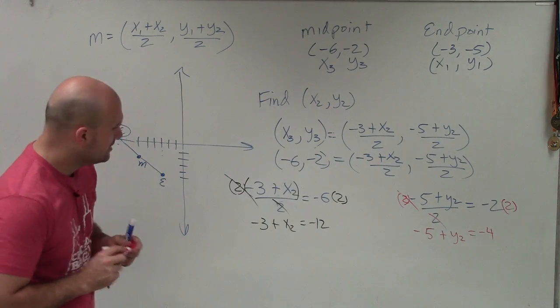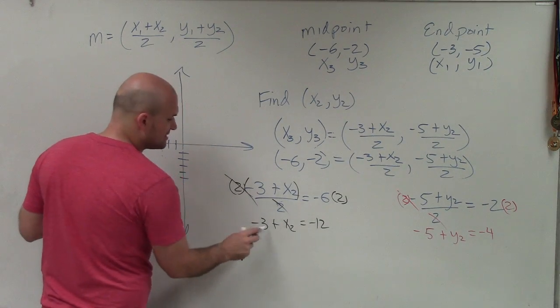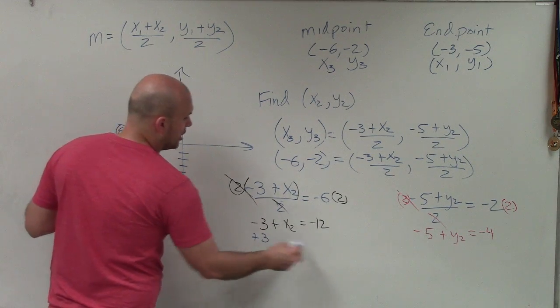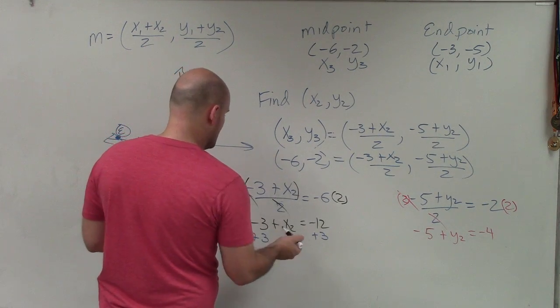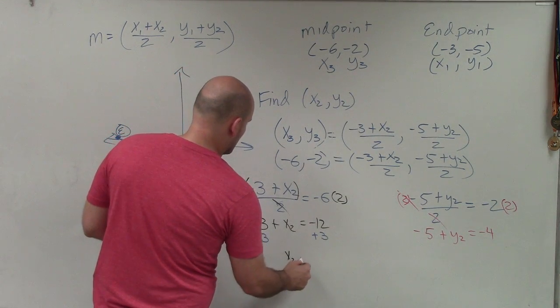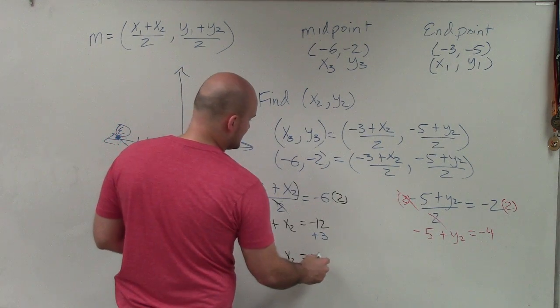So now, what I simply need to do is use my inverse operations again to solve for x2. So since I'm subtracting by 3, I'll add a 3 on both sides. And now, ladies and gentlemen, you can see that I have x2 is now equal to -12 + 3 is -9.